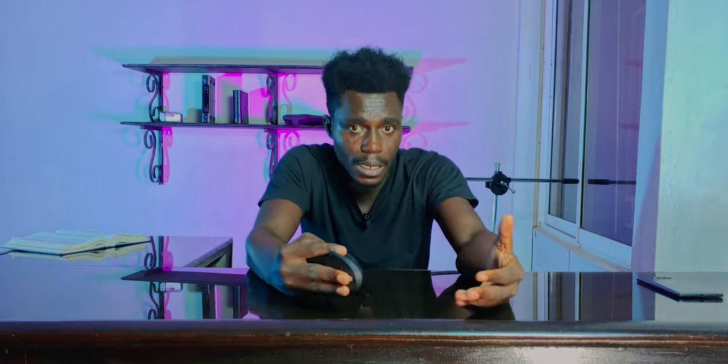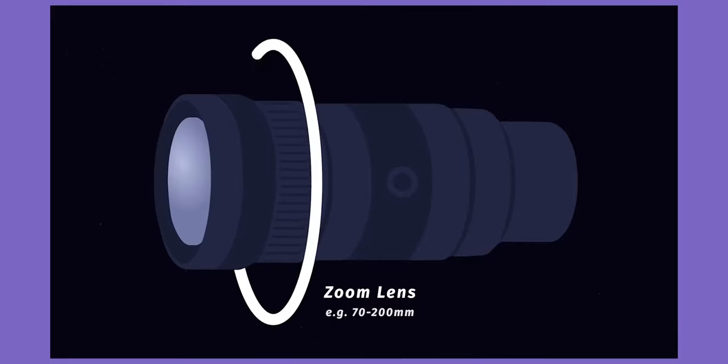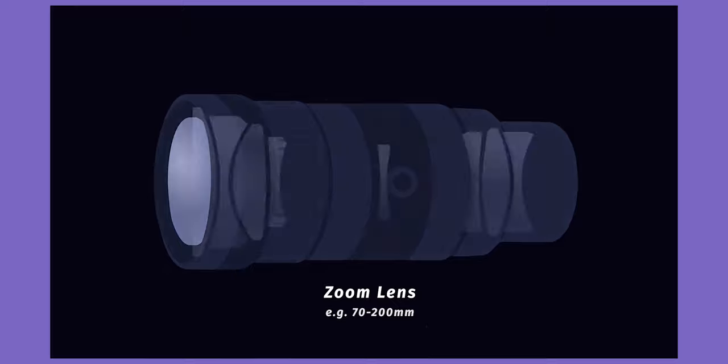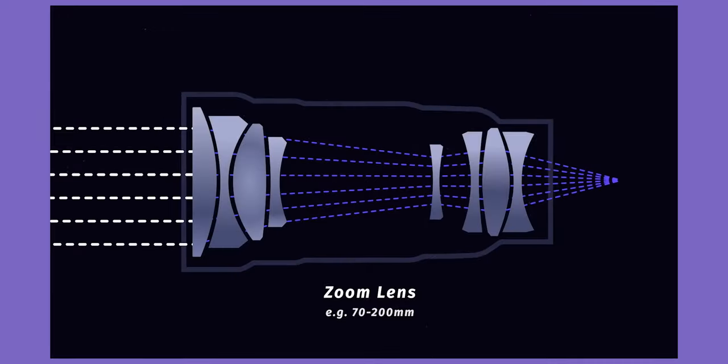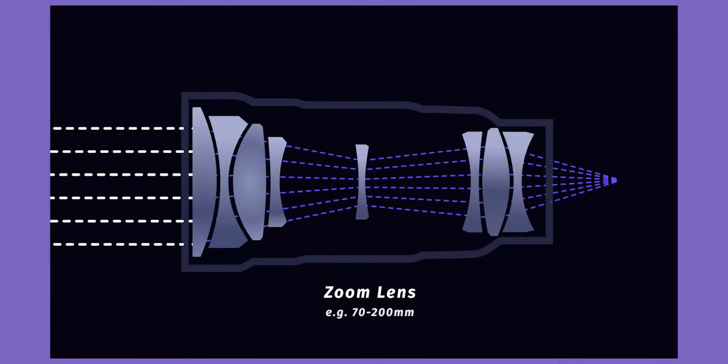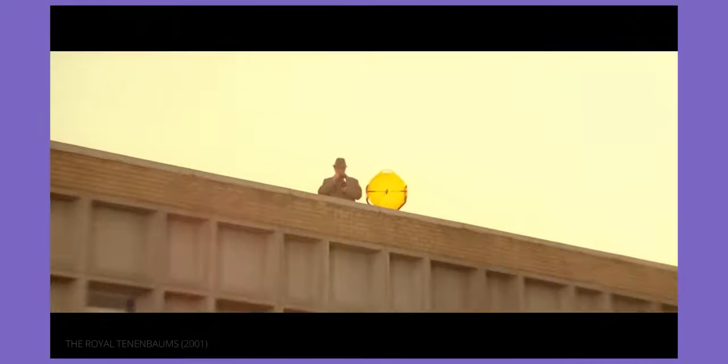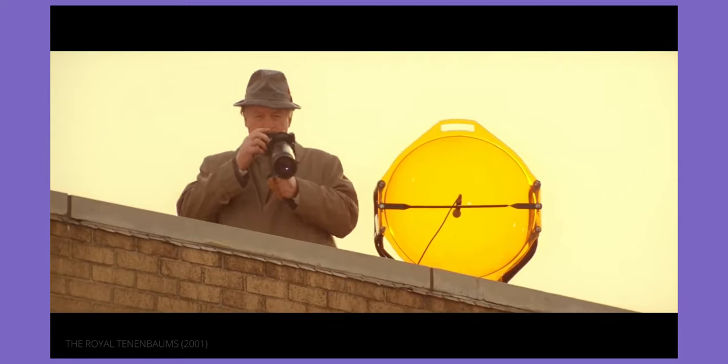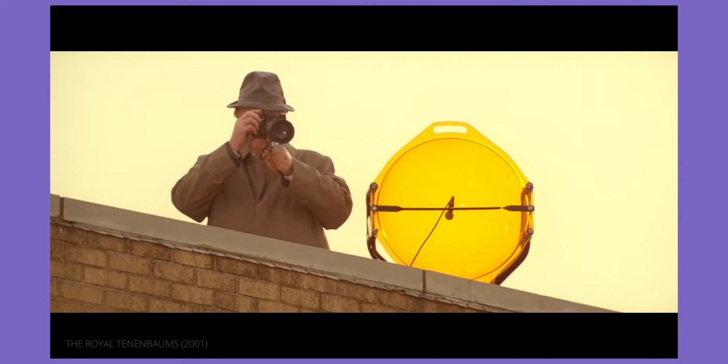Okay, let's talk about a zoom lens. A zoom lens can be defined as a lens that varies its focal length by adjusting various lens elements, either by zooming in or zooming out.